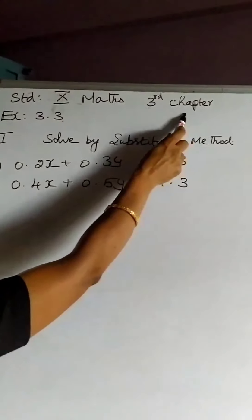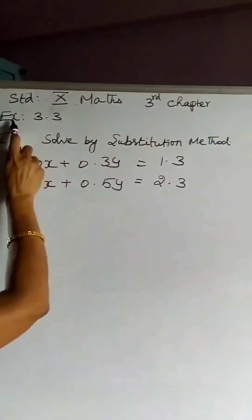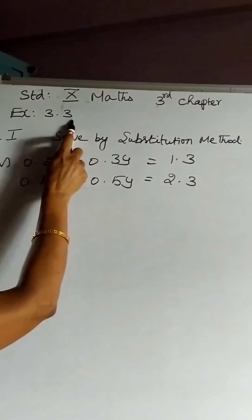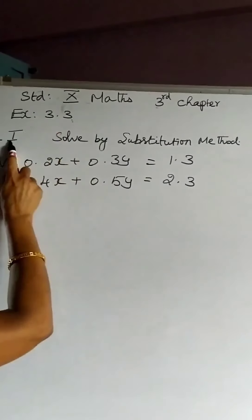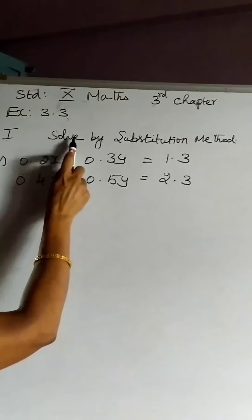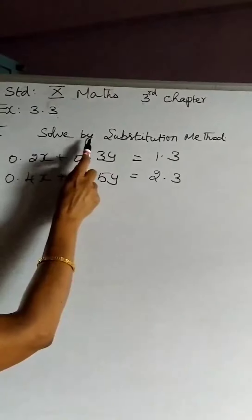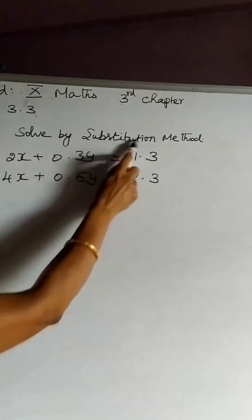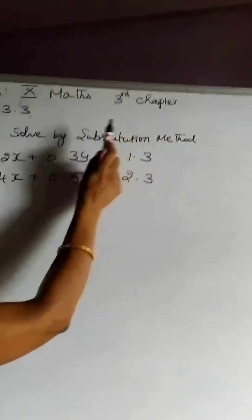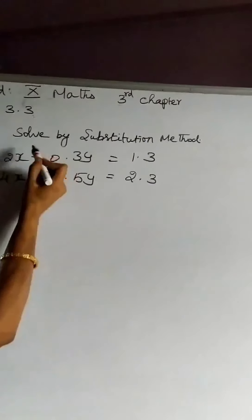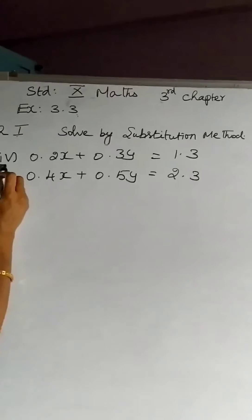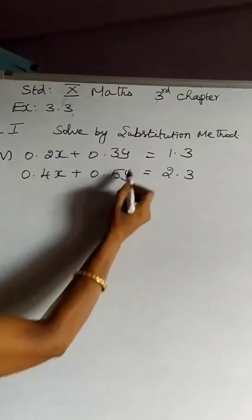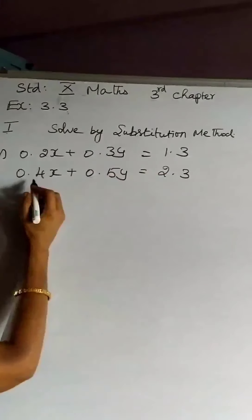We are continuing with the third chapter. Today we are going to see Exercise 3.3, Question number 1. The question is to solve the following pair of equations by substitution method. In this question we have taken the fourth sum. The question is copied on the board.